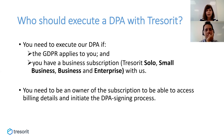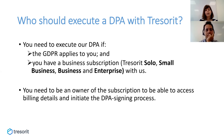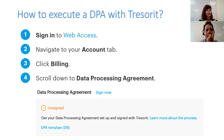With Tresorit, you can sign a DPA if you have a business subscription — i.e., if you have a solo, small business, business, or enterprise subscription with us. As we understand that a high percentage of our customers will probably need to sign a DPA, we implemented a process whereby you can sign the DPA very easily and quickly. I will give you some details about how you can do it through your web access.